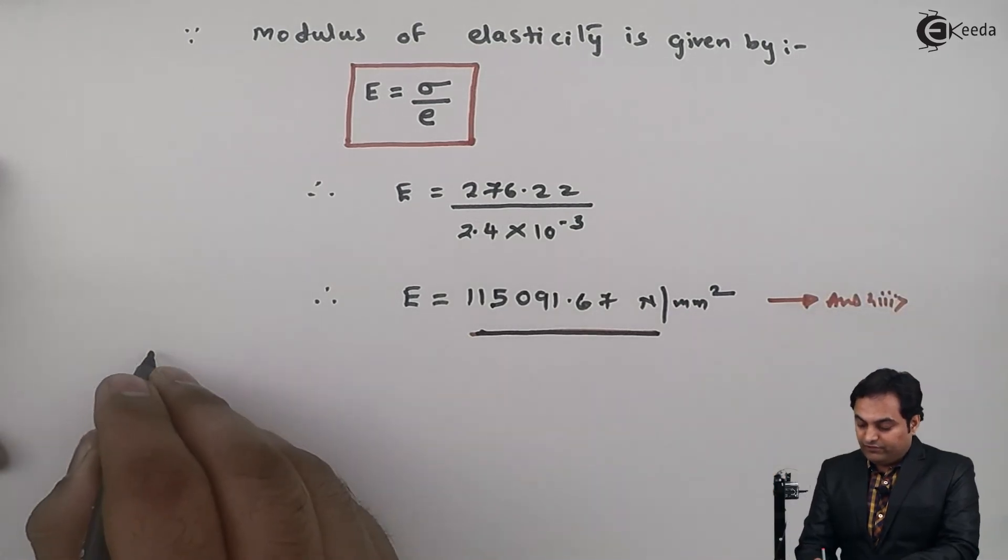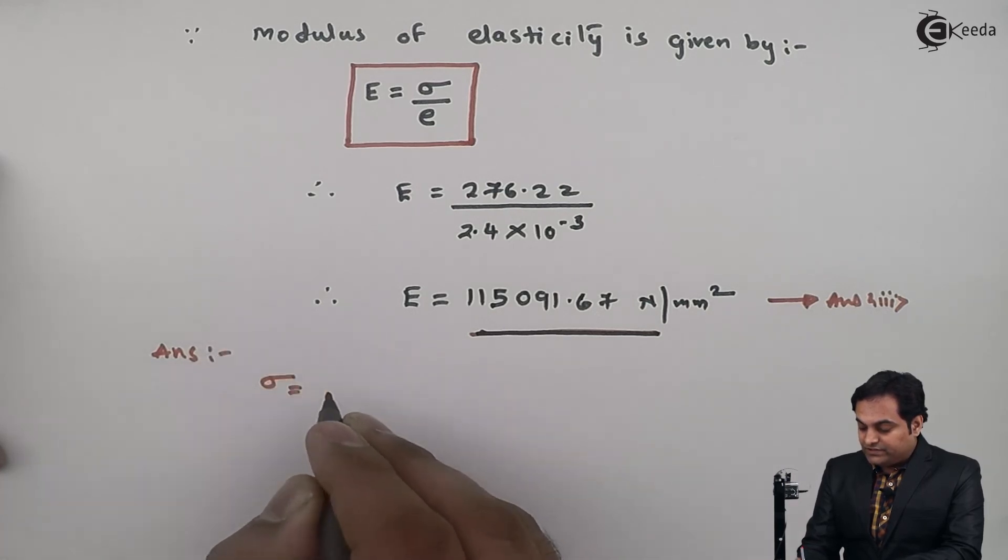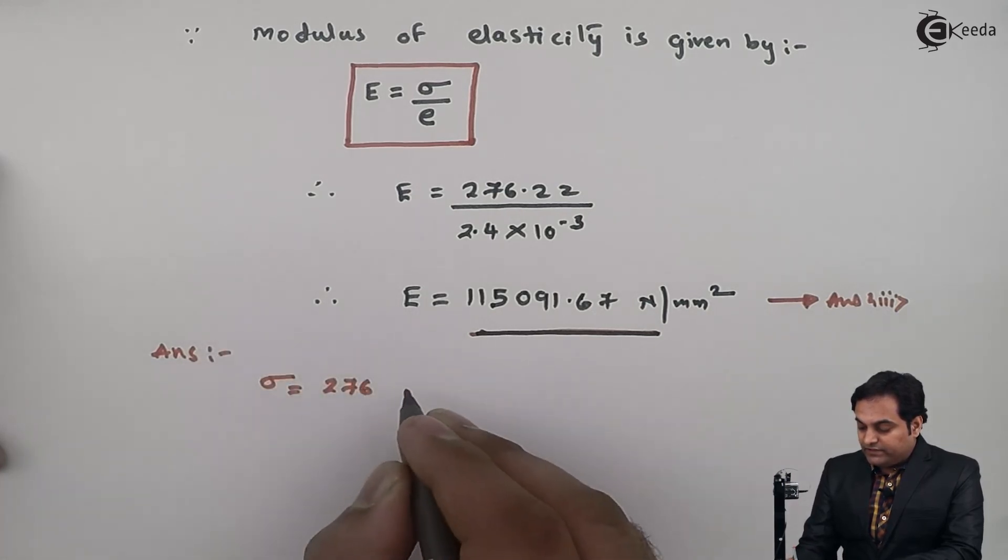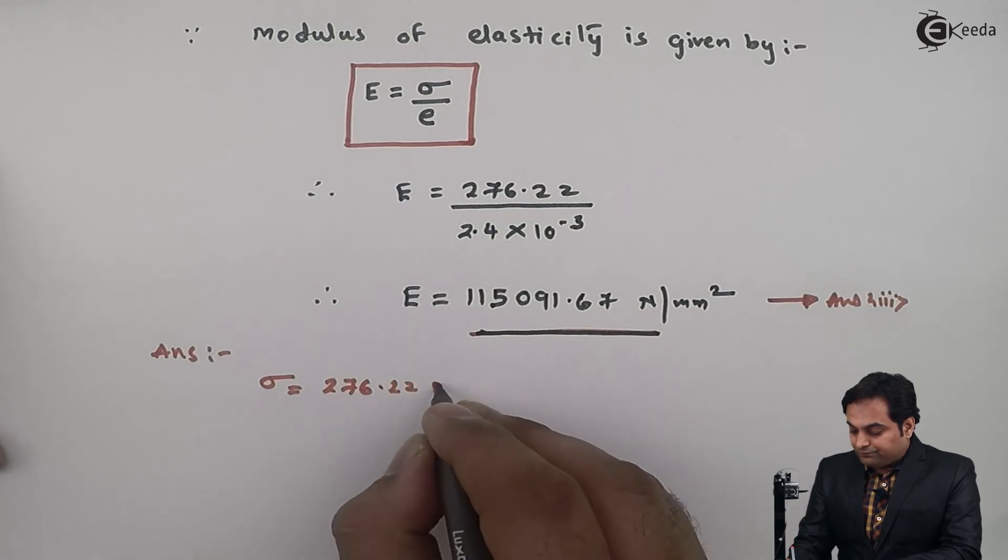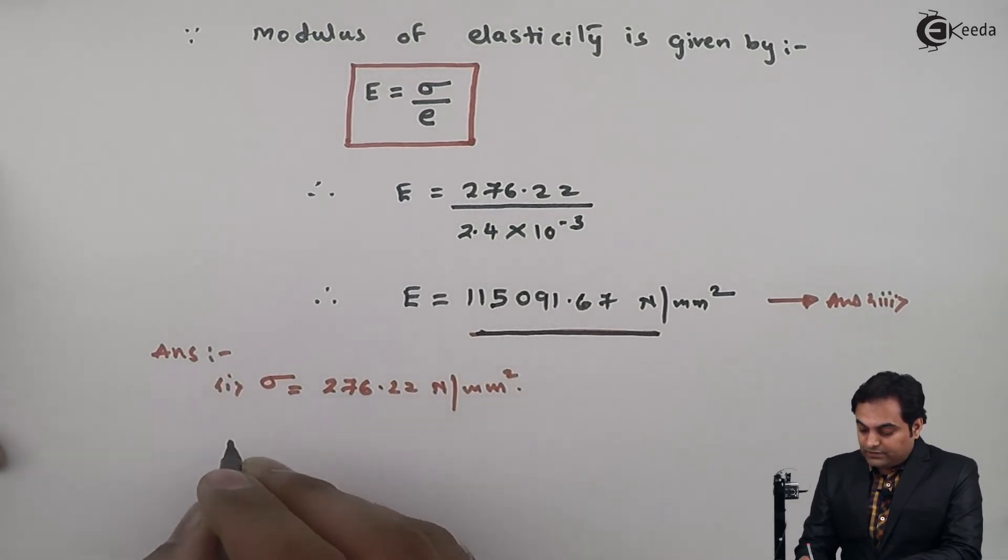So if I write the answers at the end, here we have got stress as 276.22 Newton per mm², answer number one. Strain: 2.4 × 10⁻³.